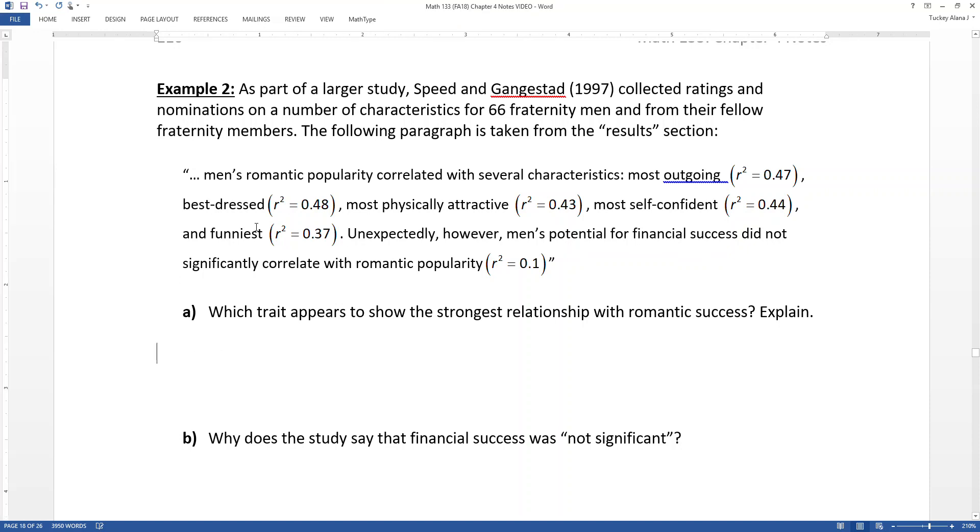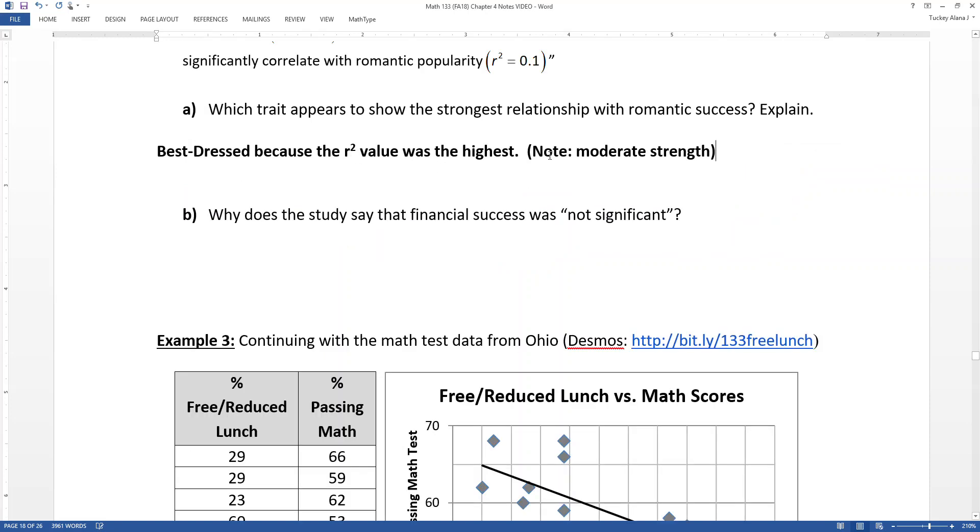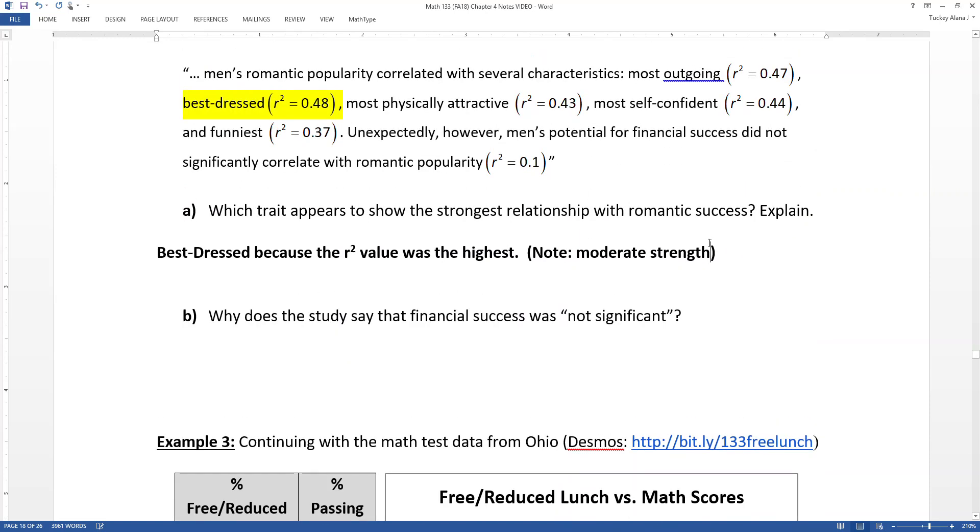So first question. Which trait from this study appeared to have the strongest correlation or strongest relationship with romantic success? That would very obviously be the best dressed, because best dressed has the highest correlation coefficient, or excuse me, coefficient of determination out there, followed very closely by most outgoing. How willing you are to get out there and talk to other people.